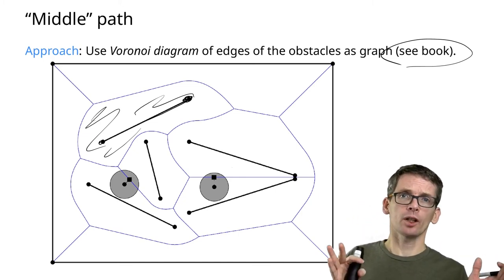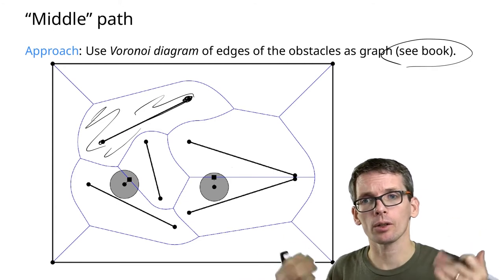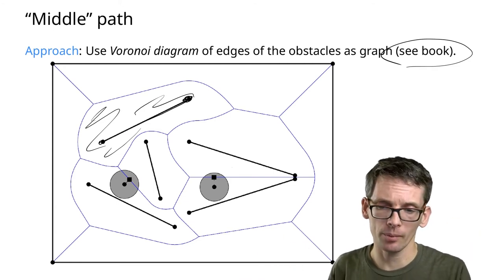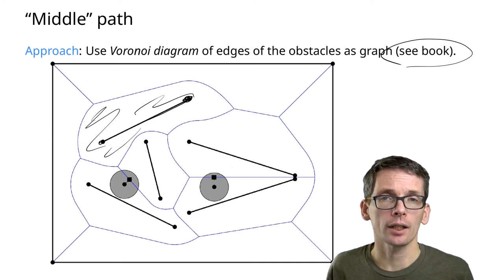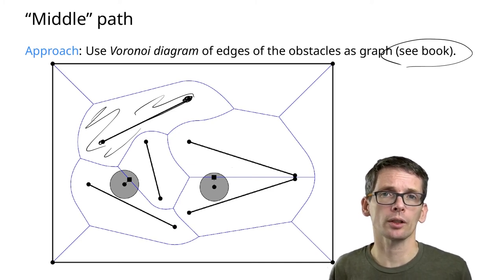This is the cell of all points that has this line segment as closest line segment. I can still compute a Voronoi diagram and the algorithm is in the book. Then I can still use that Voronoi diagram for a motion plan.